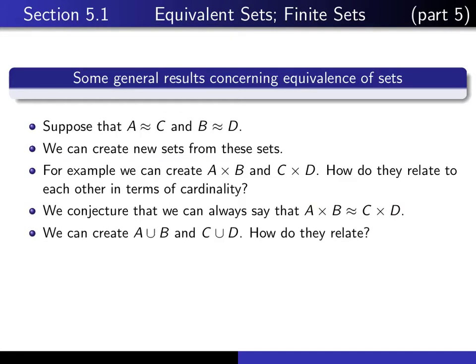Another kind of set we can create from these sets is we can take the union of A with B and the union of C with D. If A and C have the same cardinality and B and D have the same cardinality, can we expect the unions to have the same cardinality?